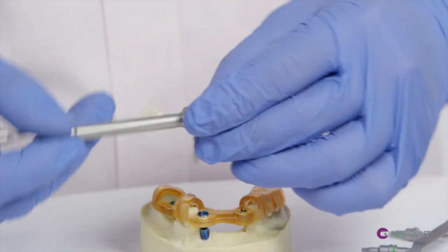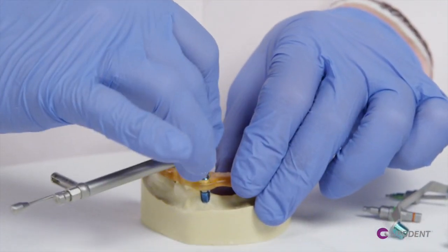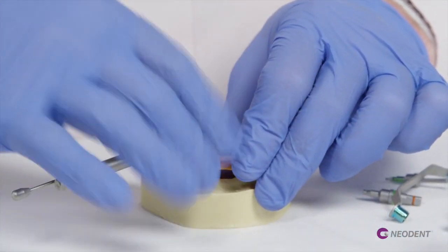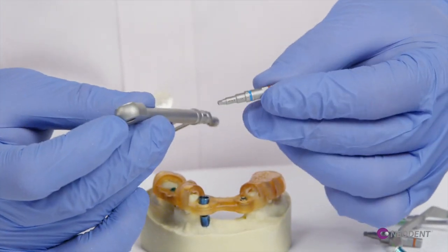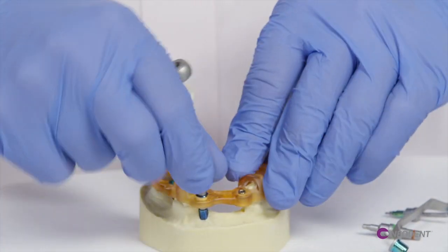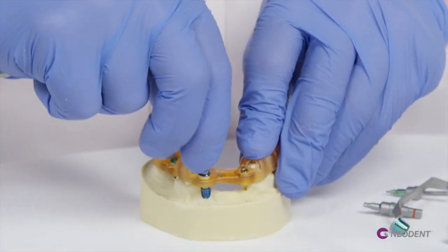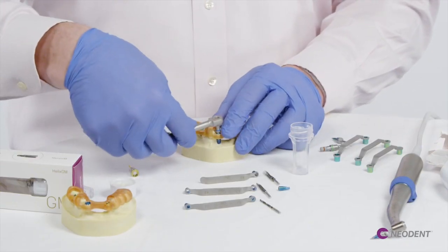If I have difficulty placing that driver into the implant itself, I can always disengage it from the torque wrench and place that manually down through the sleeve and make sure that I feel there's a positive seat with my driver into the implant itself. And then drop our wrench down on top.